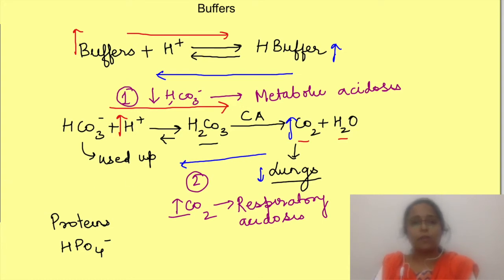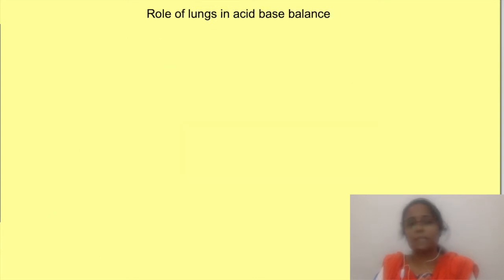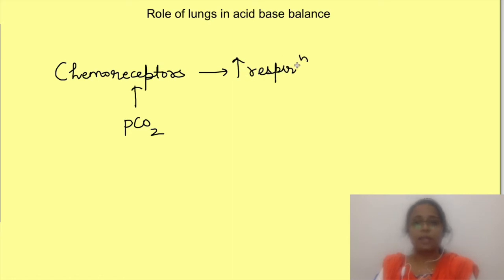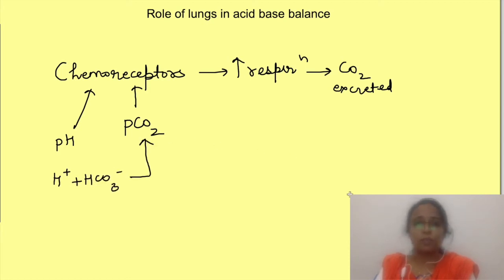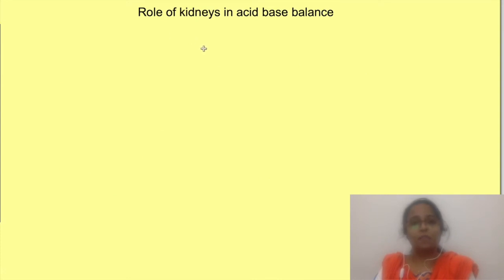Whatever the cause of acid addition, the kidneys and lungs come into action — assuming normal function. The body has chemoreceptors which detect the partial pressure of carbon dioxide, stimulating respiration and hence greater excretion of CO2. These chemoreceptors are also stimulated by pH itself, i.e., by hydrogen ion concentration directly. This makes sense as a feed-forward action, since hydrogen ions combining with bicarbonate will ultimately form carbon dioxide.